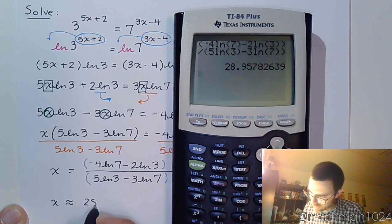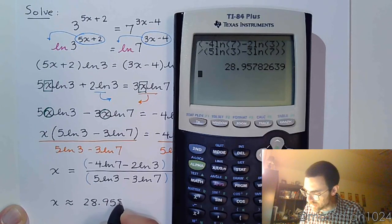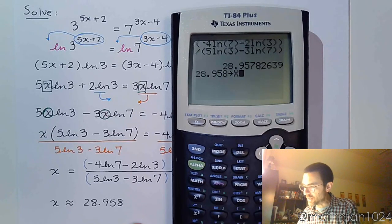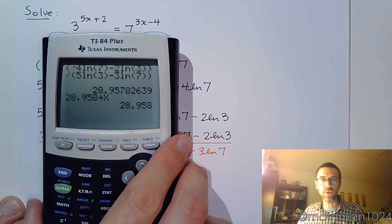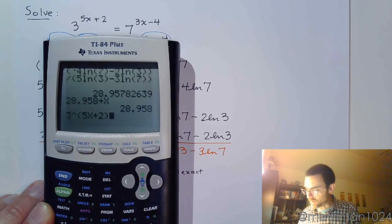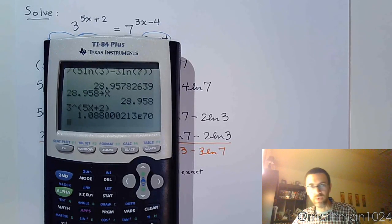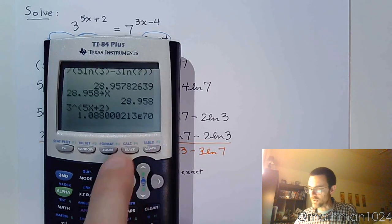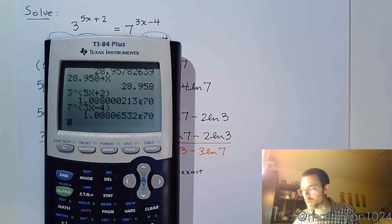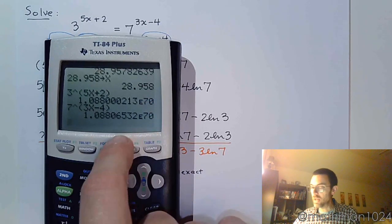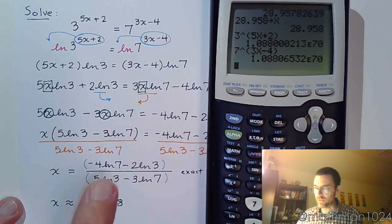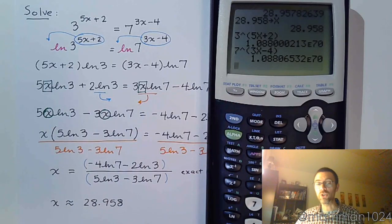28.958, so 28.958 is my approximation. Alright so 28.958, let's store that into x and let's check our work. So here at the very beginning let's see if the left and the right sides are the same. 3 raised to the group 5x plus 2. Yeah, the big number times 10 to the 70th. Let's do the other side: 7 raised to the group 3x minus 4. And I get pretty much the same thing, they're both times 10 to the power of 70, 1.088, 1.088, they're off by a little bit but again we did round. But I do know this is exact and this is my approximation and the calculators show me that it checks out.